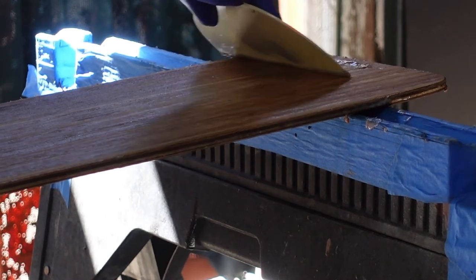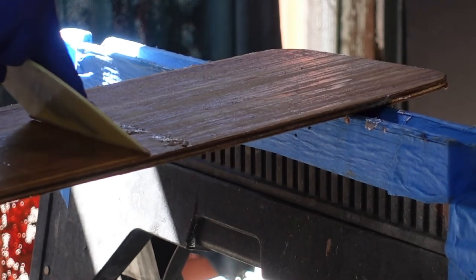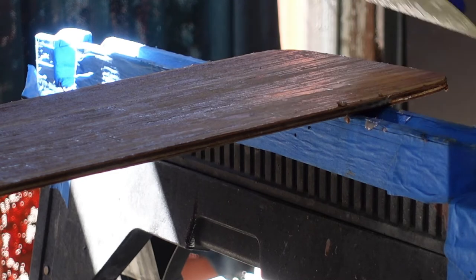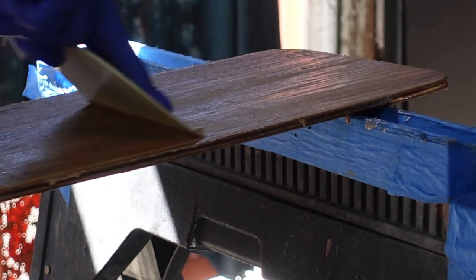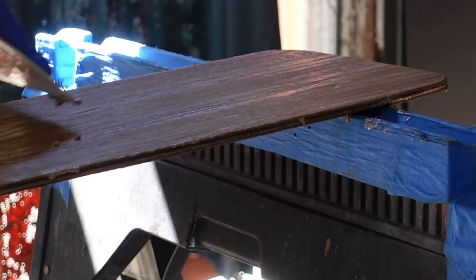After I was done scraping, I hit it with the oxalic acid teak brightener (see how that works in the previous video) and rinsed it off again, let it dry. There's still some discoloration but I still gotta sand it with some 220 grit, so hopefully that'll take care of that.